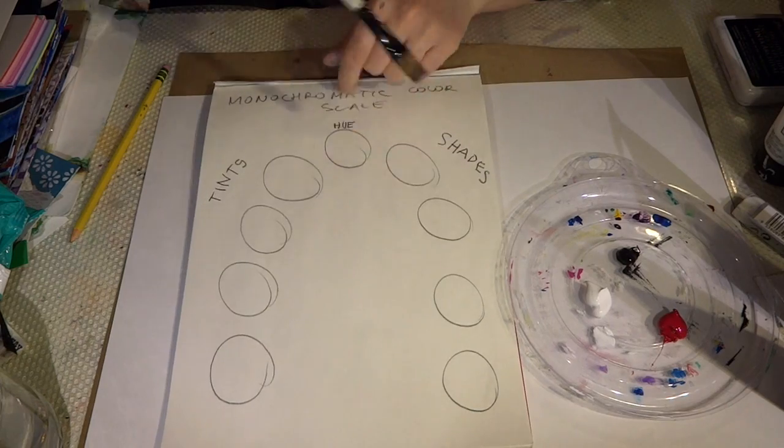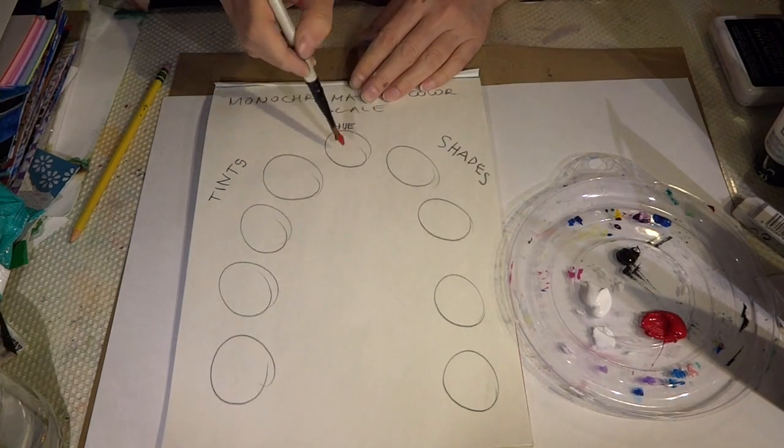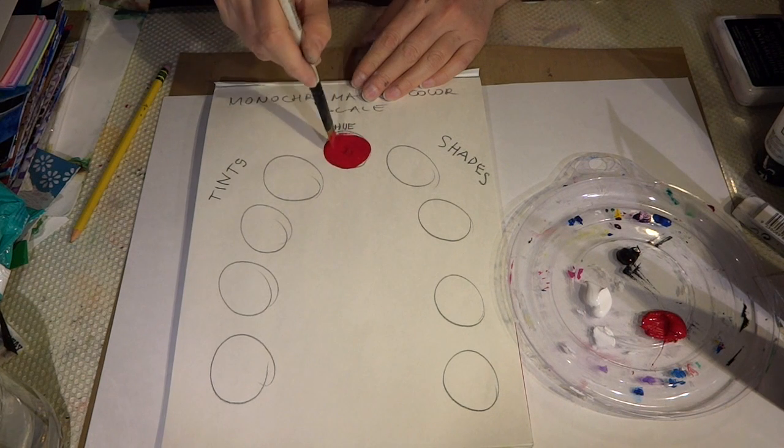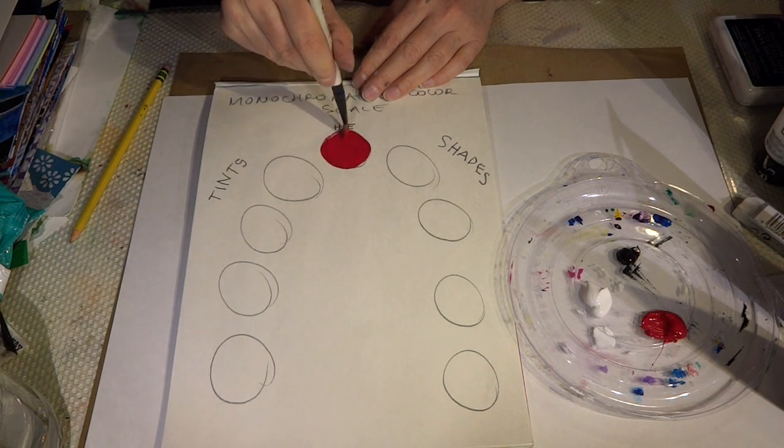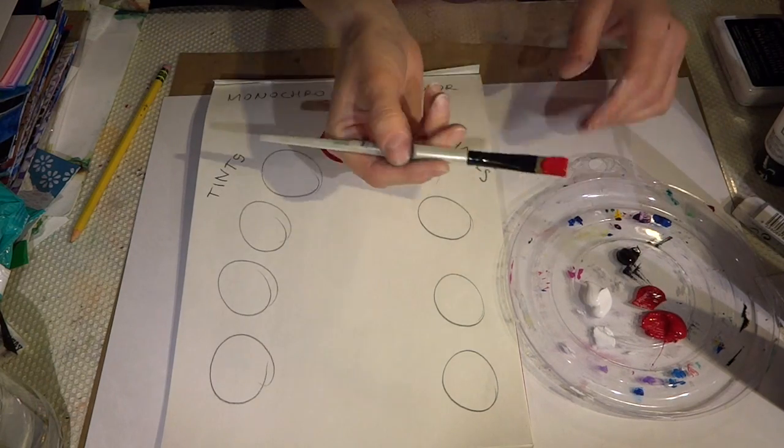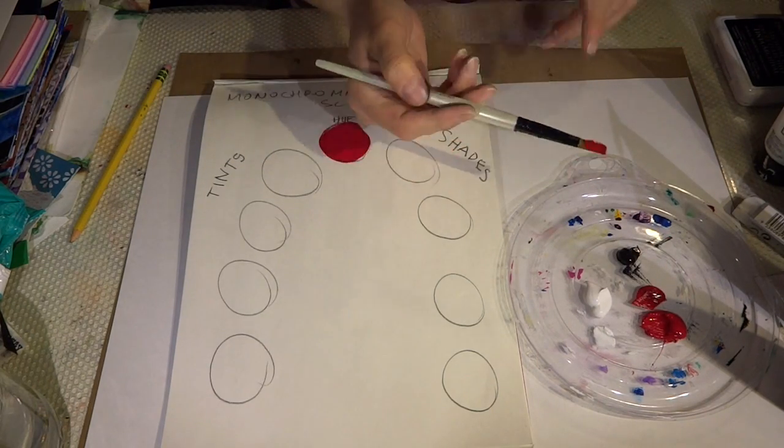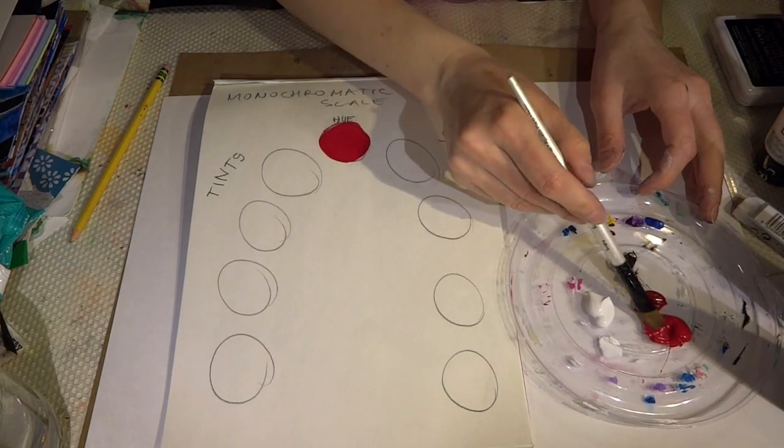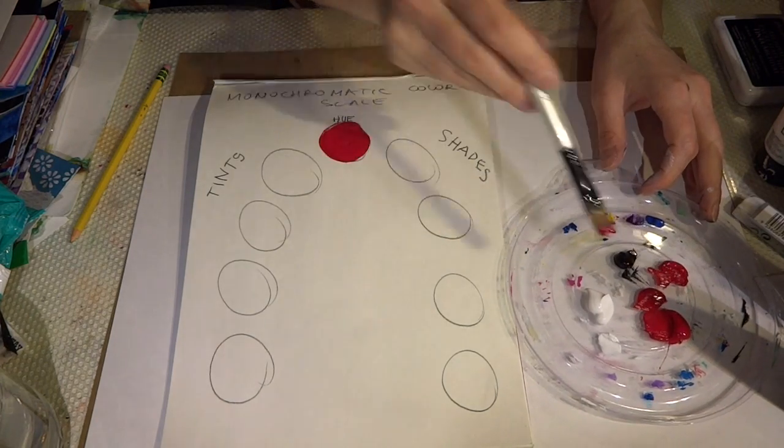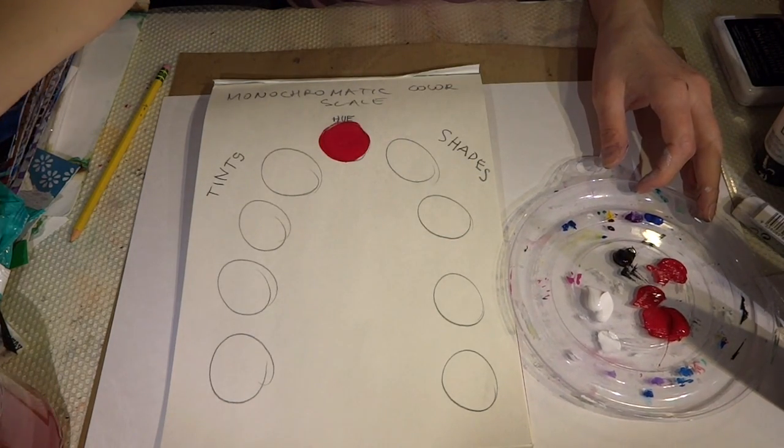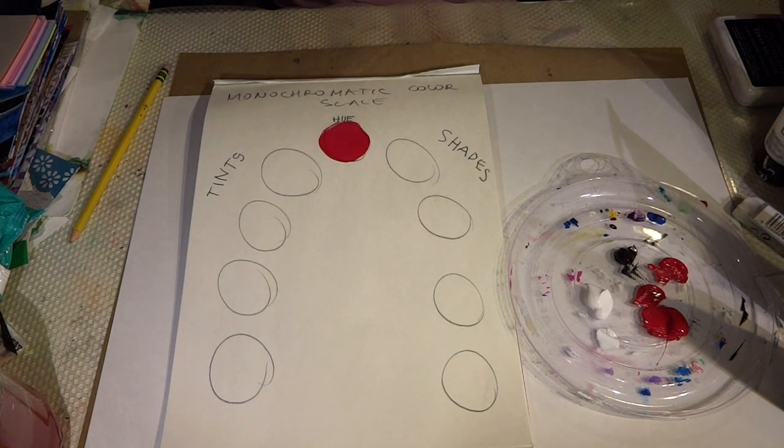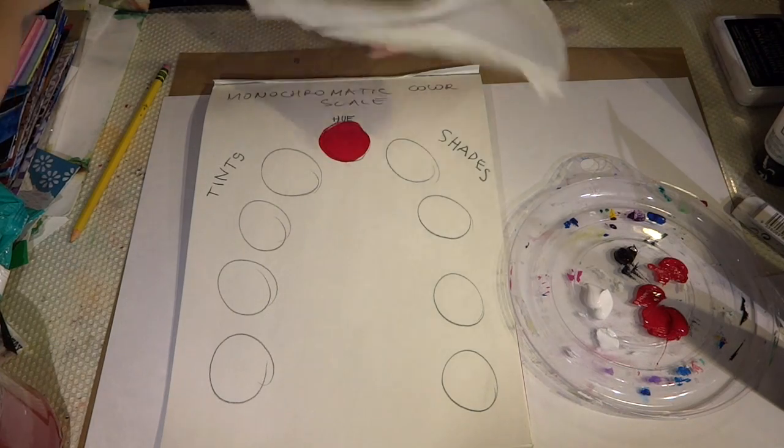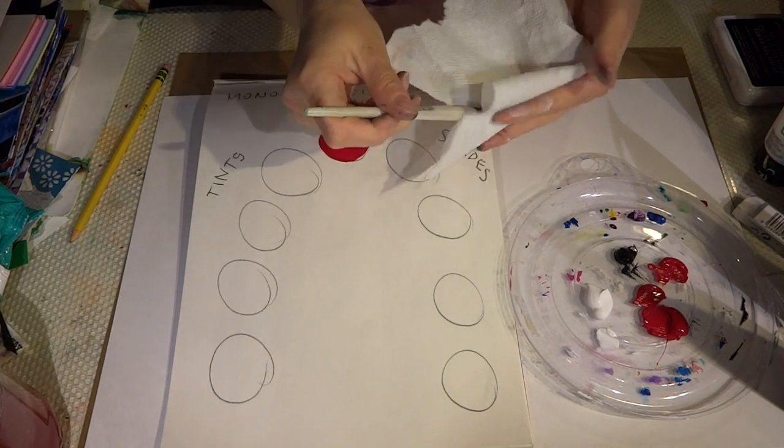The first thing we are going to be doing is adding the pure hue straight out of the bottle. I'm going to go ahead and paint my first shape red. When I'm done with the red, I'm going to go ahead and put some to the side for myself and wash my brush out. Wash it really well. Don't forget to set out maybe a piece of paper towel so you can dry the brush.